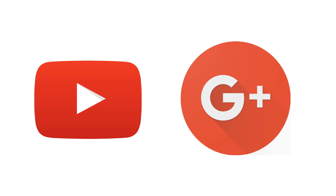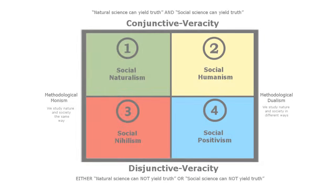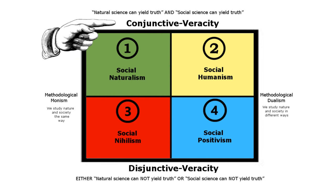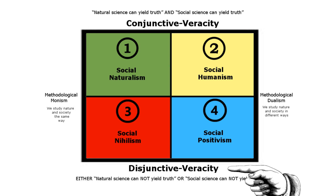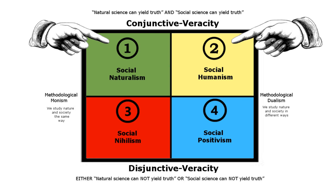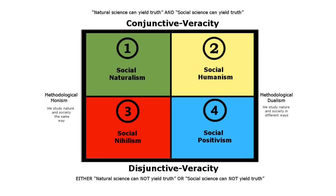The options are arranged along the following axes. The vertical axis runs between what I've called conjunctive veracity on top and disjunctive veracity on the bottom. By conjunctive veracity I mean that both the study of society and the study of nature can yield truth — that both disciplines not only claim but are also capable of achieving the status of science. Which is why options one and two at the top, social naturalism and social humanism, are optimistic about the possibility of both social and natural truths.